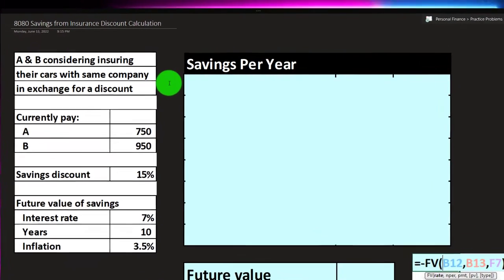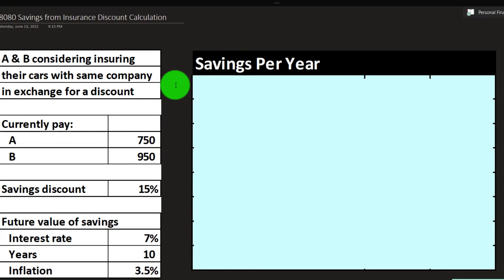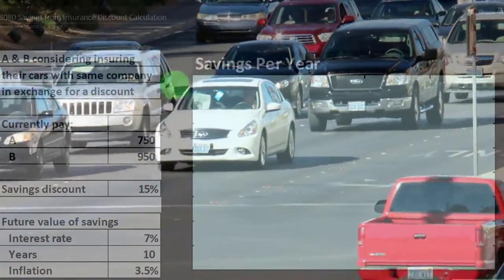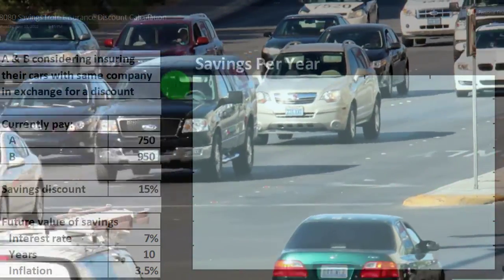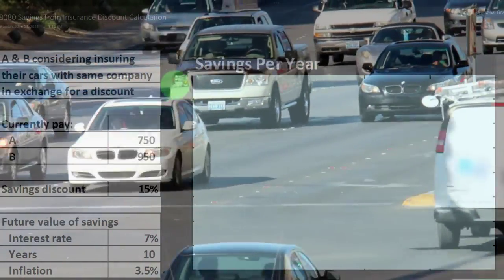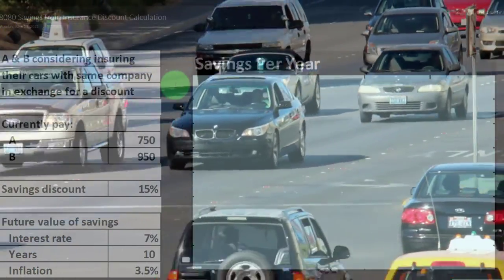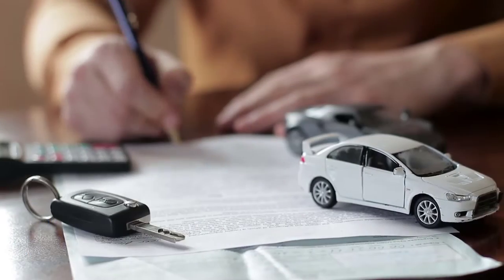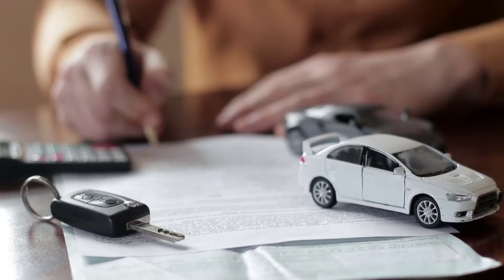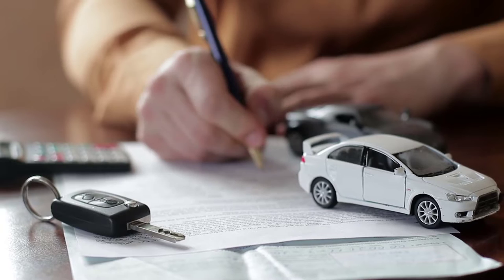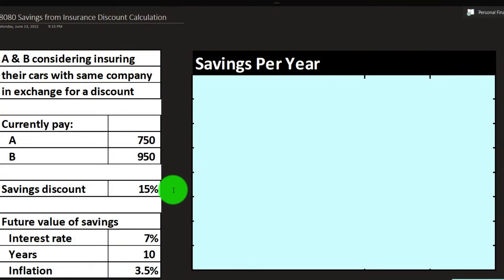Information on the left-hand side says that we have A and B who are considering insuring their cars with the same company in exchange for a discount. We're imagining person A, person B currently having two different companies for their car insurance, possibly getting a discount if they go with the same company. Currently, at their different companies, person A is paying 750, person B paying 950.